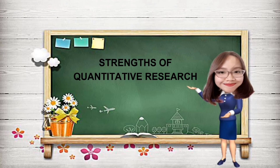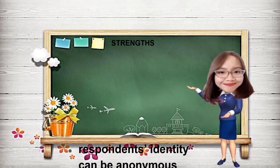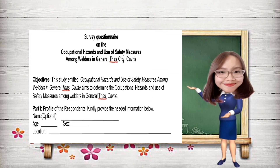Let us start with the strengths of quantitative research. First, when the researcher gives questionnaires to the respondents, it is not necessarily needed that the respondents will provide their name. Most of the time, writing the name and other personal data about them is optional. Here is an example of a survey questionnaire which does not require the respondents to provide their name.